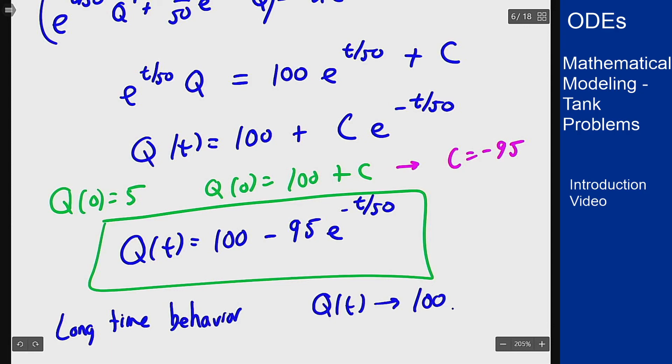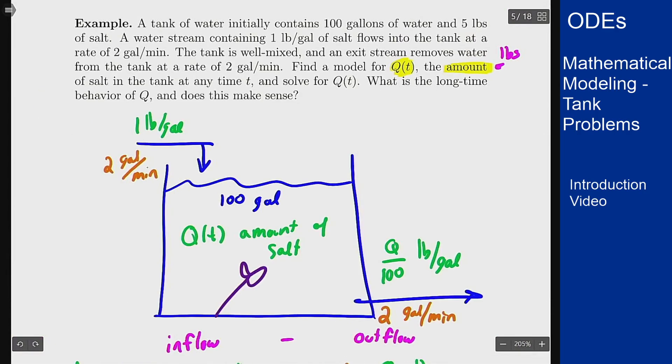Well if we go back to the actual problem statement it kind of does make sense because our inflow rate here has a concentration of 1 pound per gallon. If you think in long enough time if you keep pumping this in the concentration should also go to 1 pound per gallon because you just keep putting in water at that concentration into the tank. And so if that happens, a 1 pound per gallon concentration with a tank of 100 gallons means that my Q(t) should go to 100 in the limit because that will give it a 1 pound per gallon concentration.